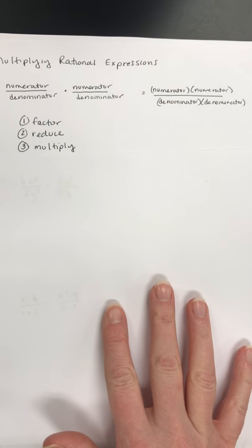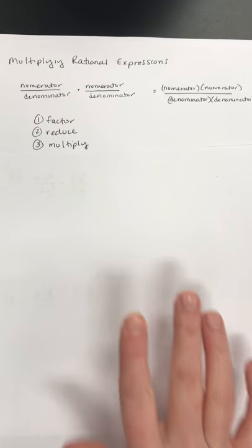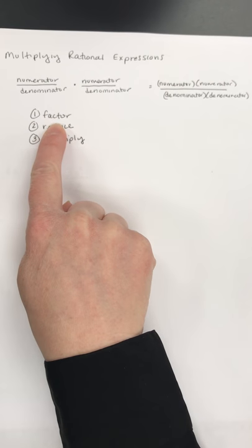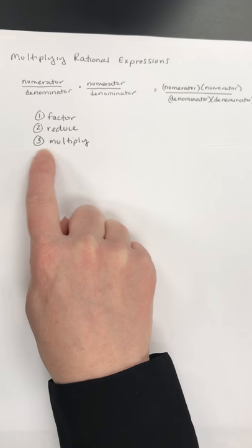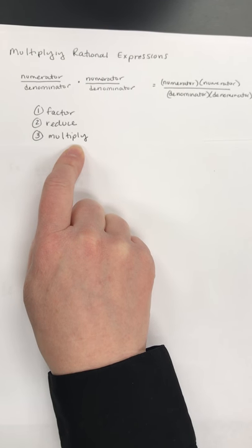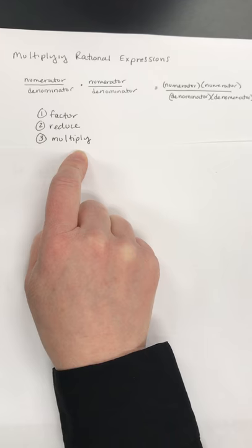When you are multiplying rational expressions, the first thing you're going to look for is factoring and reducing. Factoring, and then the second thing you're going to do is reduce, and then the next thing you're going to do is multiply. So just multiply numerator times numerator, denominator times denominator.